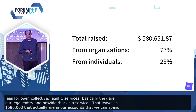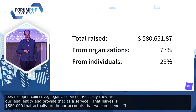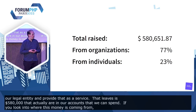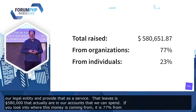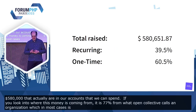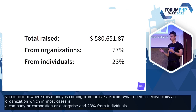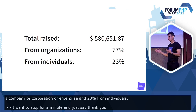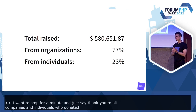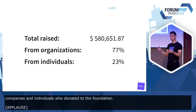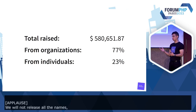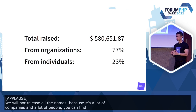They are our legal entity and provide that as a service. That leaves us with $580,000 that are in our account that we can spend. Looking at where this money is coming from: 77% from organizations — which in most cases is a company or corporation — and 23% from individuals. I want to stop for a minute and say thank you to all companies and individuals who donated to the Foundation. You can find all of them on our website or on the Open Collective page. Thank you and merci beaucoup to everyone who donates.